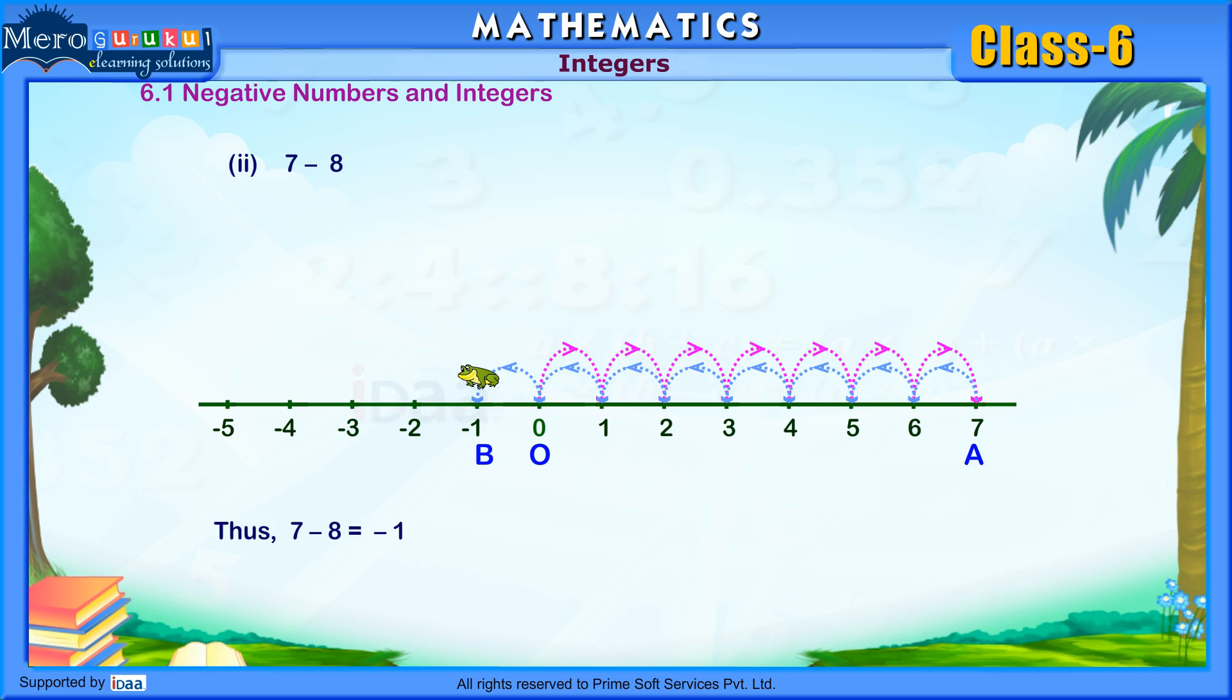Thus, 7 minus 8 is equal to minus 1. 2 minus 5 is equal to minus 3. 3 minus 6 is equal to minus 3.